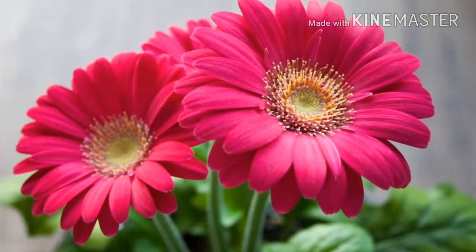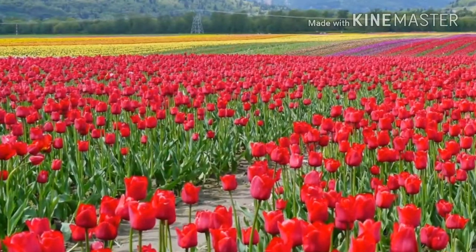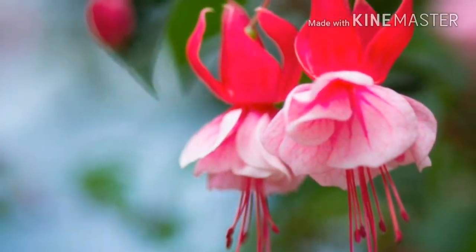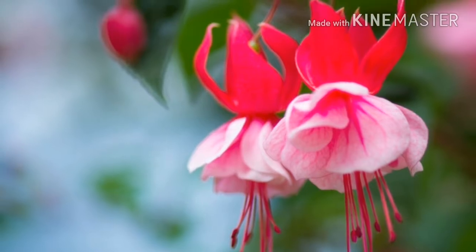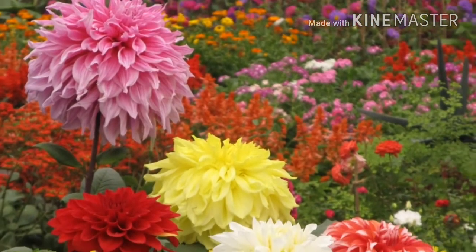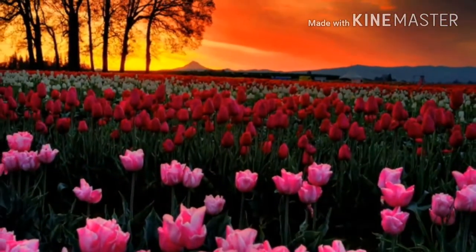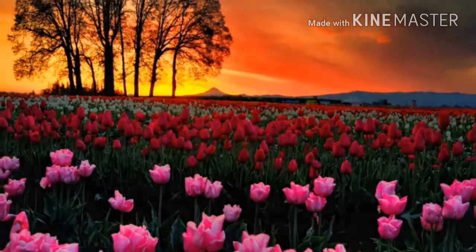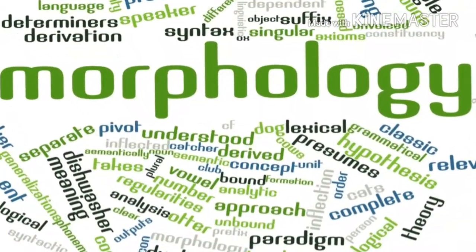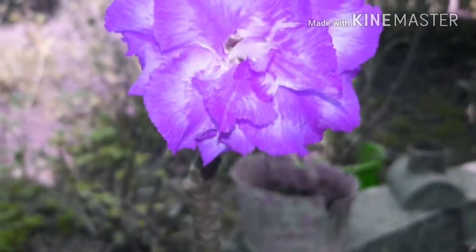A flower is a reproductive unit of the plant. Now it's time to learn the morphology of the parts of the flower. Flowers serve a significant function in plants as the reproductive part — they ensure the continuation of the plant species by a process called reproduction.